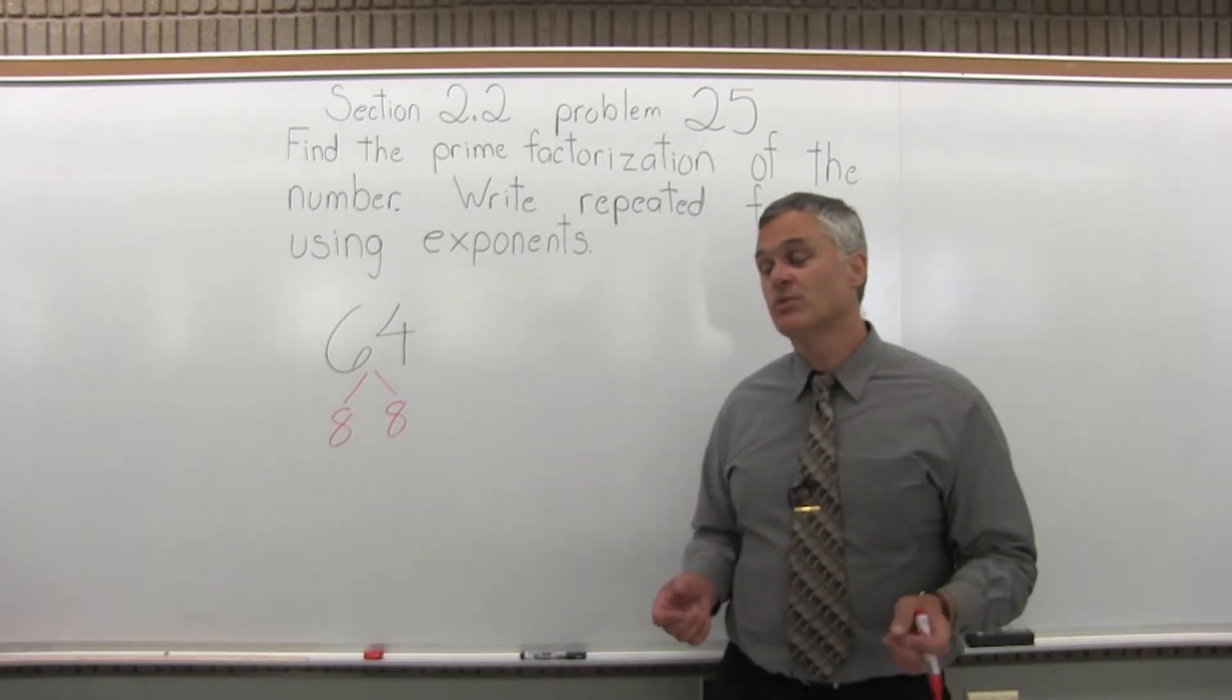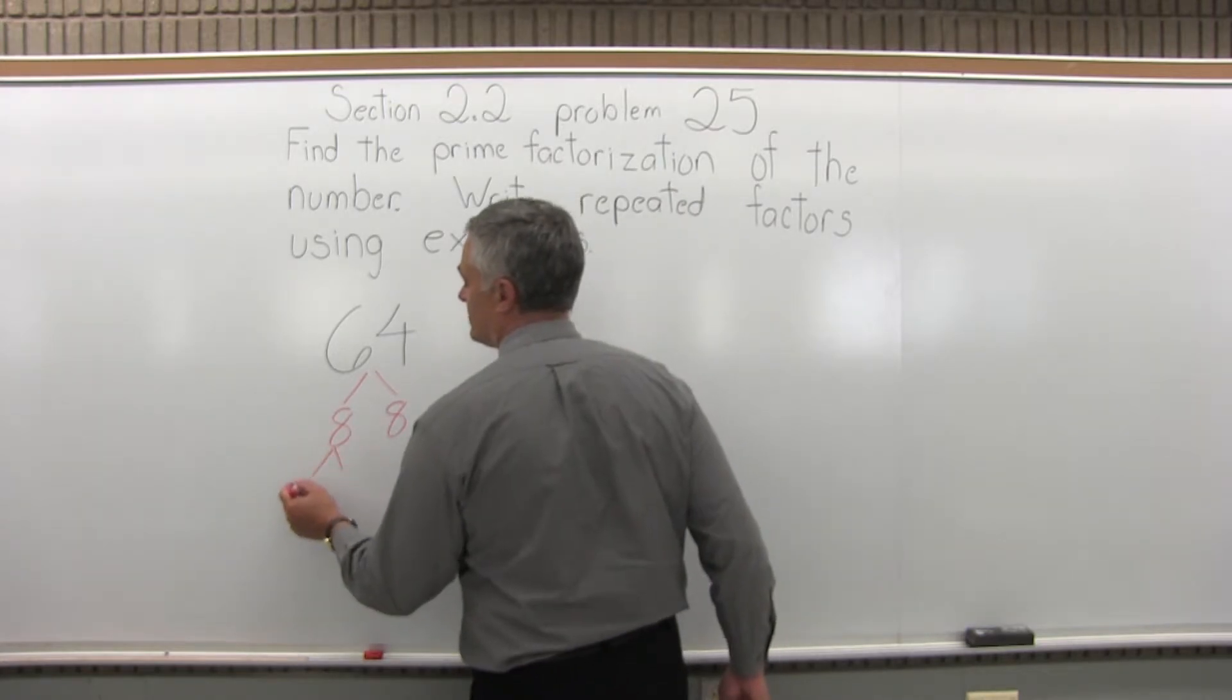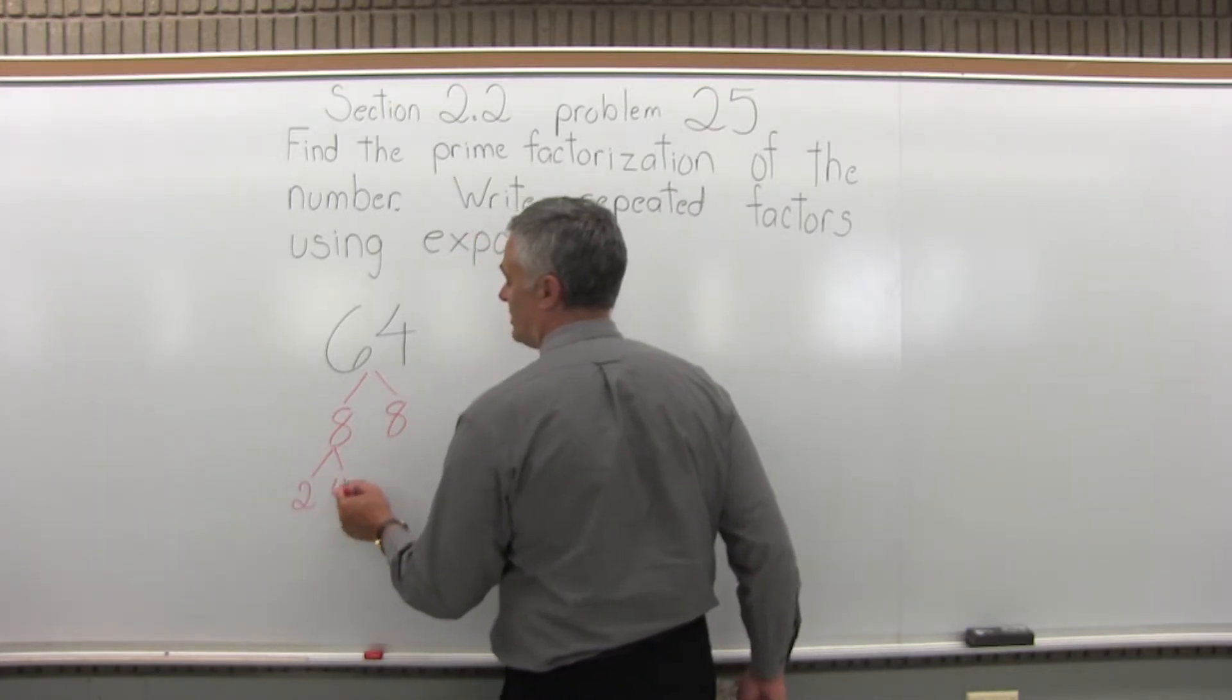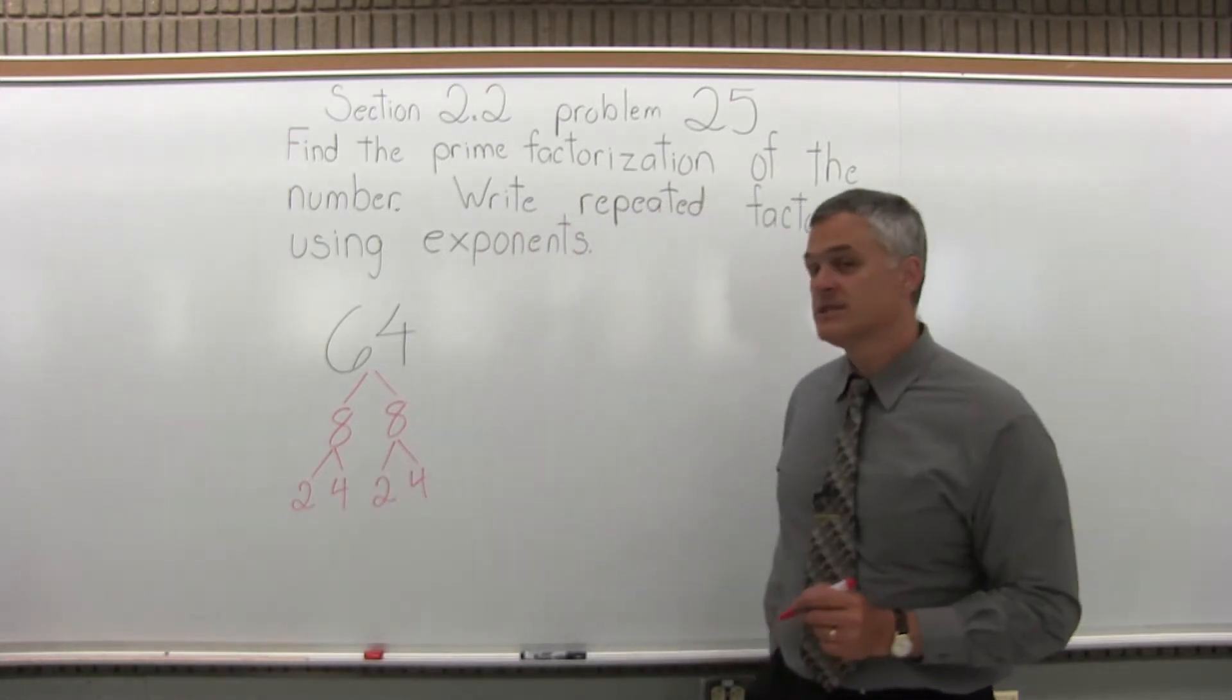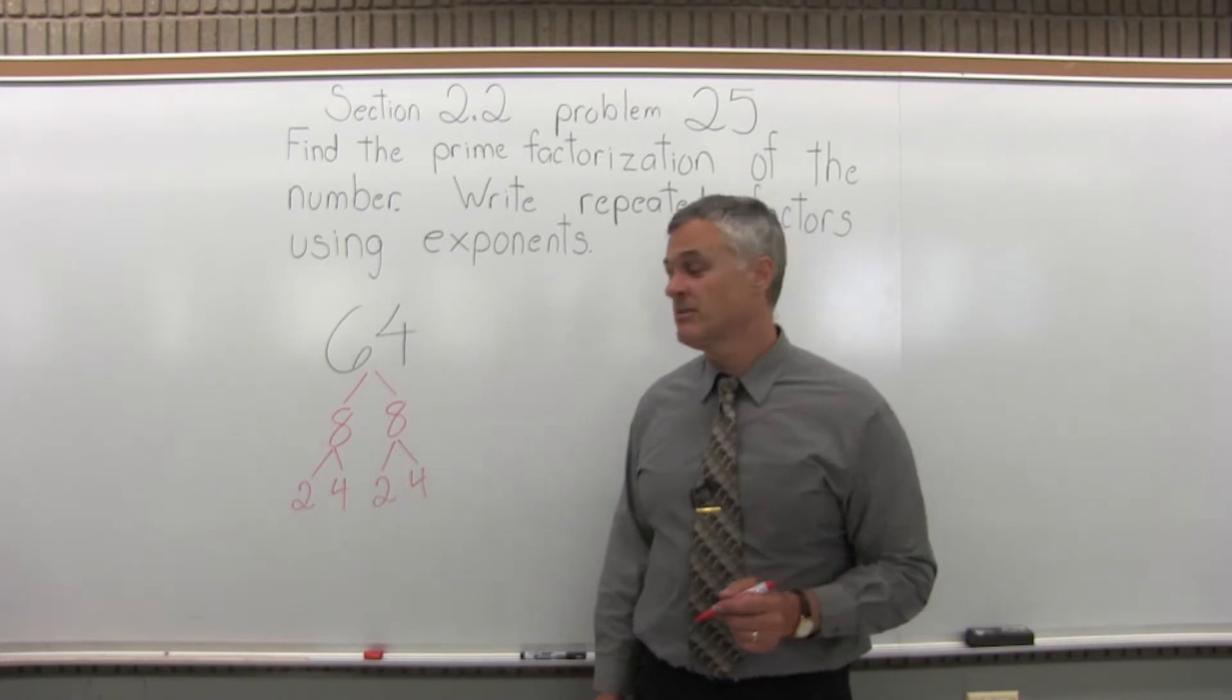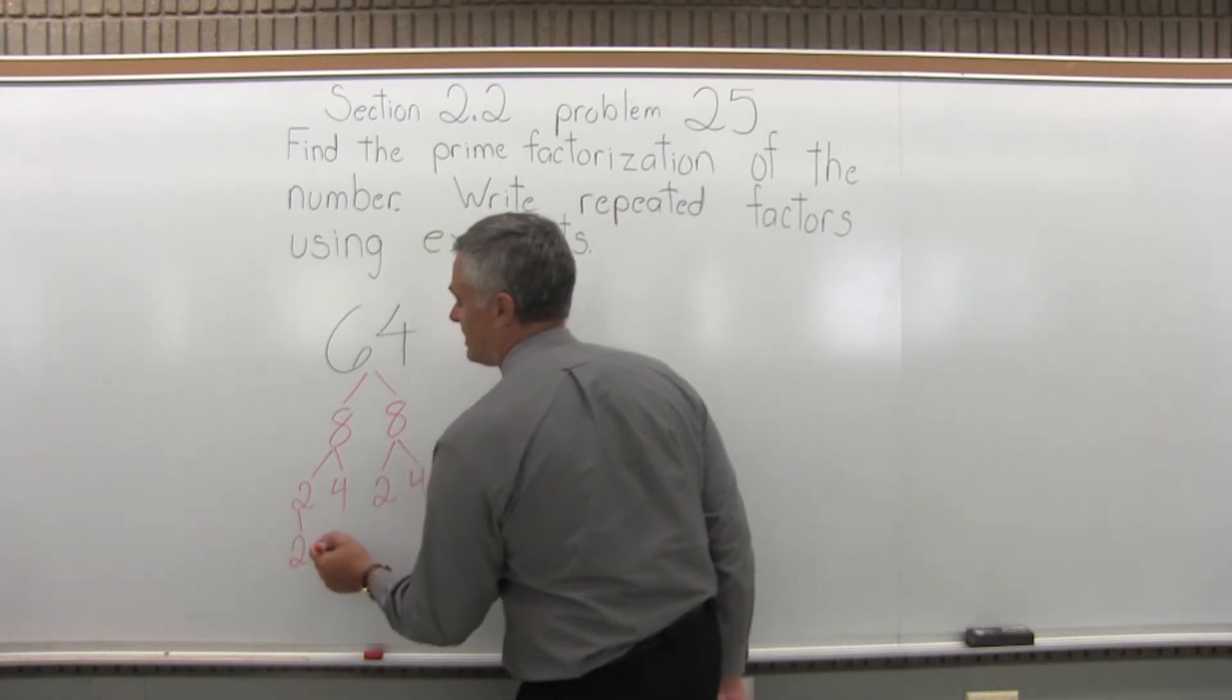8 times 8 multiplies to make 64. Neither one is prime, so I'll break each one down a little bit further. Each 8 I will split into 2 times 4, because 2 times 4 multiplies to make 8. Now at this point, the 4s can be split again. The 2s are prime, so as I come down for the next row, this first 2 will come straight down without splitting.